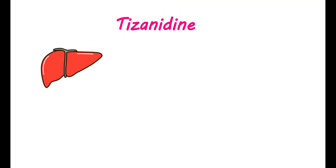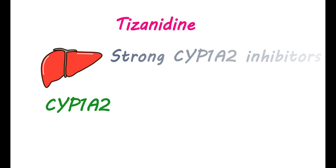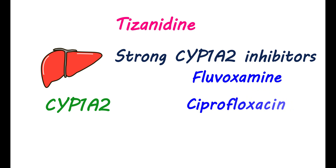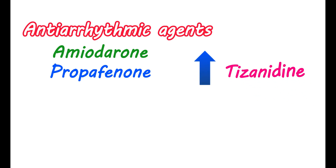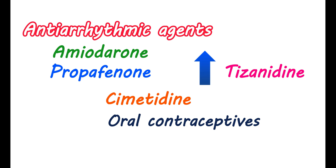Tizanidine is extensively metabolized within the liver, mainly by the cytochrome P450 enzyme CYP1A2. Other medications that affect CYP1A2 activity may increase Tizanidine levels. When this enzyme is inhibited, Tizanidine metabolism is reduced, resulting in increased levels in your body and severe hypotensive effects. Strong CYP1A2 inhibitors like fluvoxamine and ciprofloxacin should not be used with Tizanidine. Other fluoroquinolones, acting as moderate CYP1A2 inhibitors, should be used carefully. Antiarrhythmics like amiodarone and propafenone, as well as cimetidine, oral contraceptives, and antivirals like acyclovir, can also elevate Tizanidine levels due to inhibition of its metabolism. Whenever possible, these medications should be avoided.